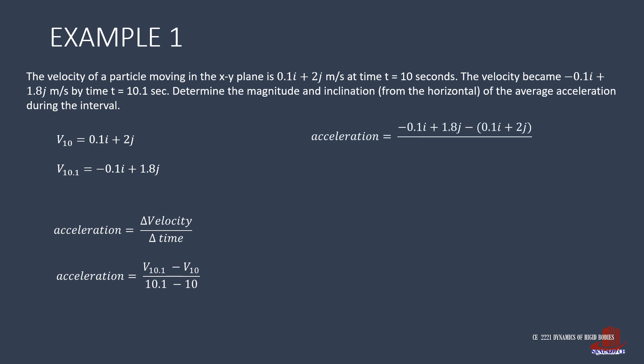Plugging the expressions given for velocities, we get acceleration in terms of i and j. Simplifying the terms, we have negative 0.2i minus 0.2j, all upon 0.1, or that is negative 2i minus 2j.